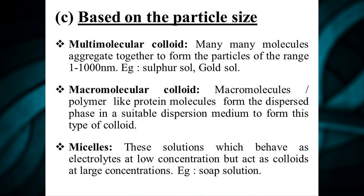The third type is micelles, otherwise known as associated colloids. These are solutions which behave like electrolytes at low concentration but act as colloids at high concentration. For example, soap solution — if we add one or two grains of soap or detergent into a bucket of water, it will not lather; instead, it acts as an electrolyte and conducts electricity. But if we add a large scoop of detergent into a bucket of water, it lathers and the solution becomes colloidal, that is turbid in nature. Such solutions are called micelles.